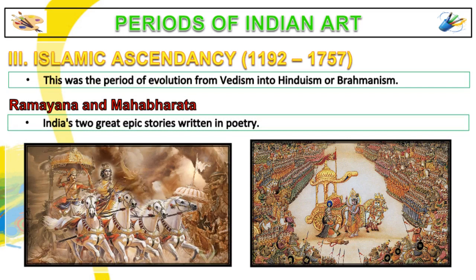Islamic Ascendancy, 1192 to 1757, or Transitional Period. This was the period of evolution from Vedism into Hinduism or Brahmanism. The two great Indian epics, the Mahabharata and Ramayana, emerged in this period.